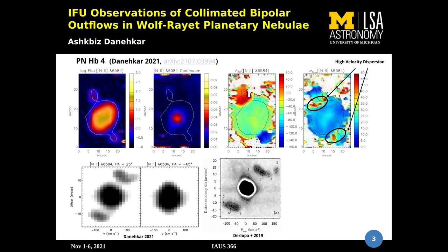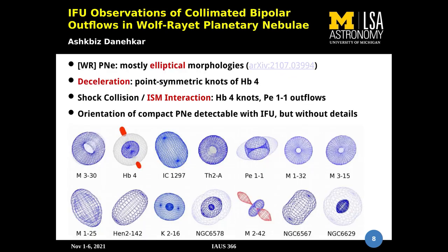Further study is required to explore possible links between this bipolar outflow and the hydrogen-depleted Wolf-Rayet central source. The results are available on this arXiv link, where you can look at the results produced by SHAPE, as well as the IFU results including PV diagrams and velocity channel maps.